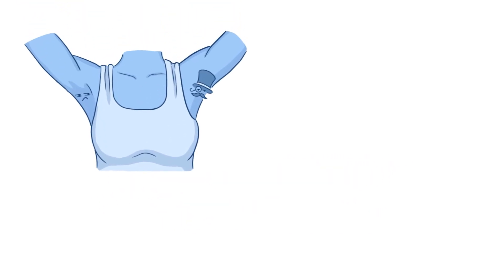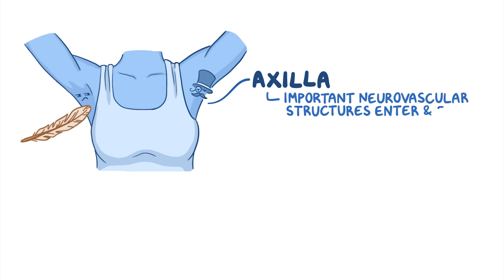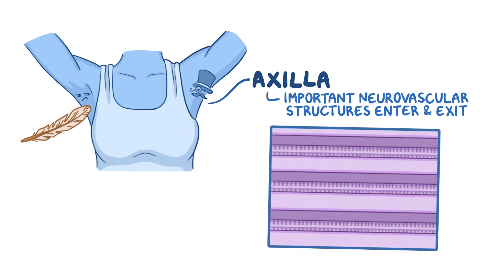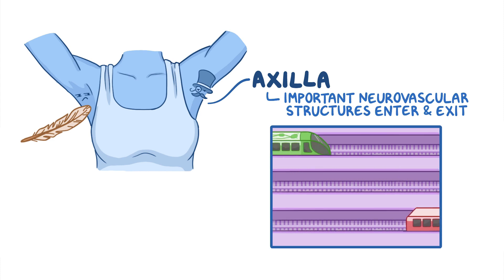I know what you're thinking. Isn't the axilla just a fancy name for the armpit? Well, besides the axilla being notoriously ticklish, it's also where many important neurovascular structures enter and exit to reach their target locations. Think of it like a train station, with many trains passing through en route to delivering electrochemical signals, blood, and lymphatics to their appropriate destinations.